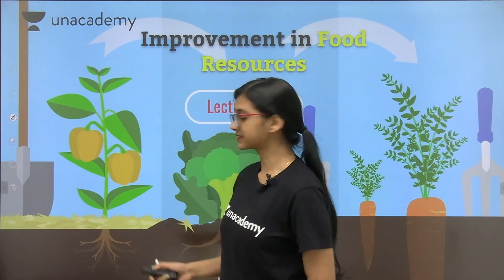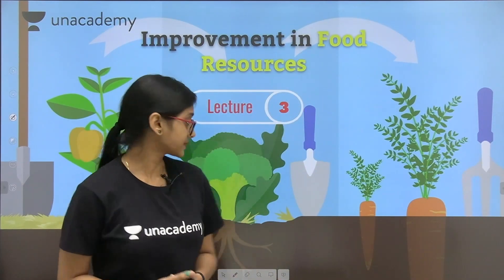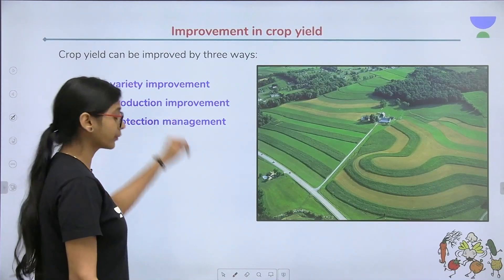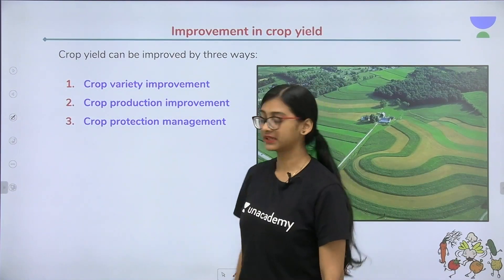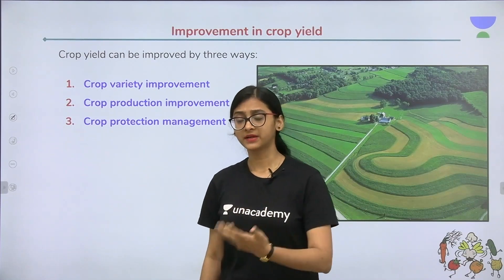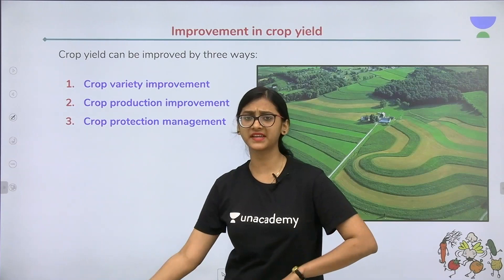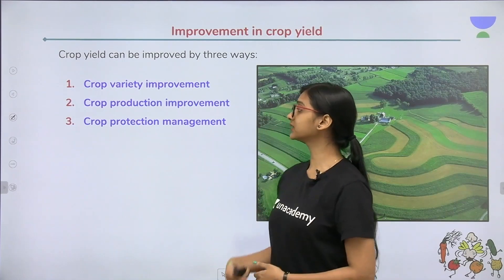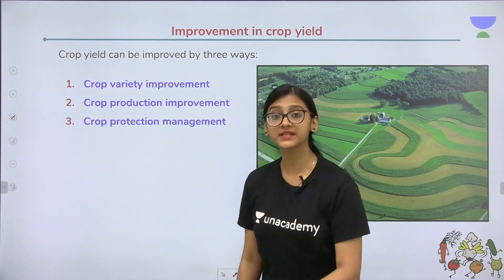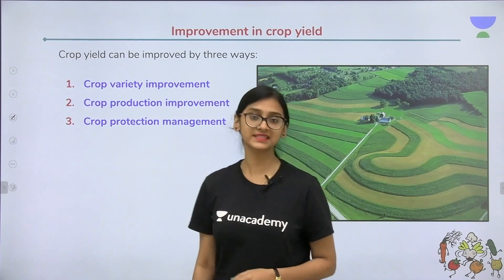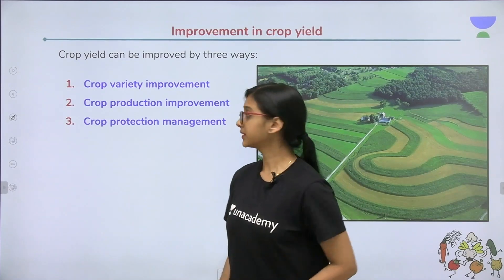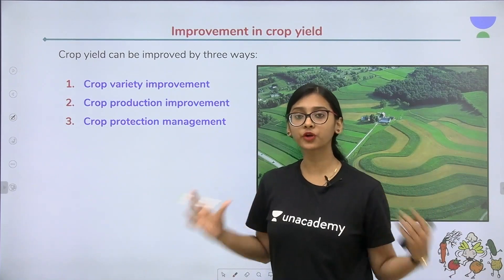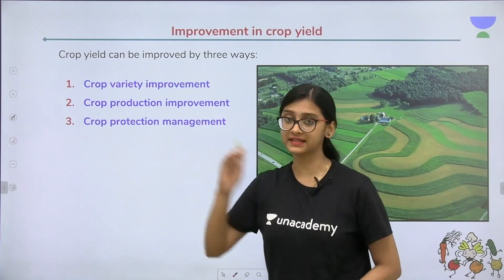Let's quickly begin the class. Implementing food resources, lecture 3. We have discussed about crop variety improvement in our previous classes — by hybridization techniques, gene modification, golden rice, BT cotton, and BT brinjal. We understood how to improve crop varieties and the purpose of doing so in lecture 2. Today we are going to understand crop production improvement — how exactly the production of crops can be increased.